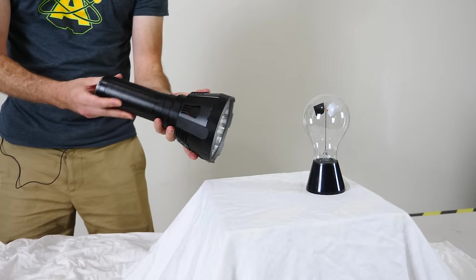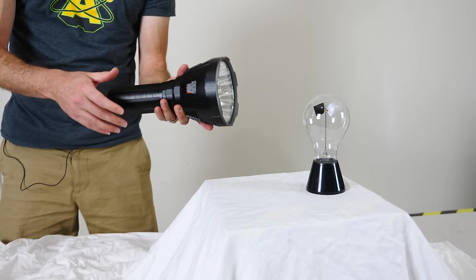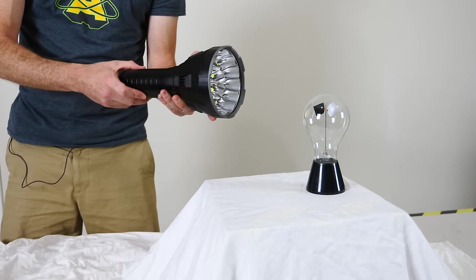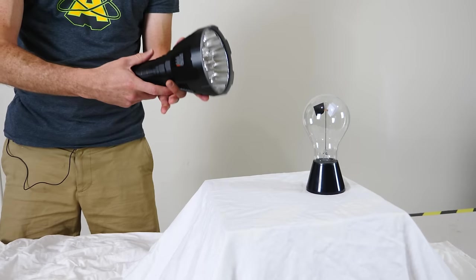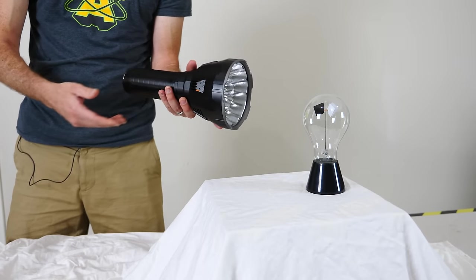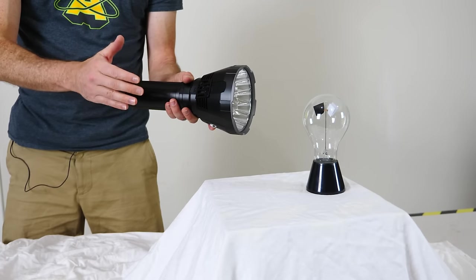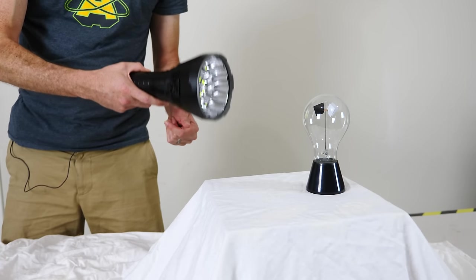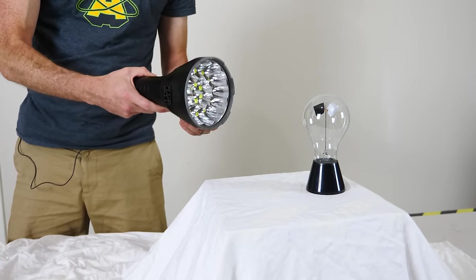Okay, so this is the Imalent MS-18. I've done a few videos with this in the past. This is currently the world's brightest flashlight. It puts out 100,000 lumens. This is freakishly bright. For example, look in my previous video how bright it is when I just shine it around my room.